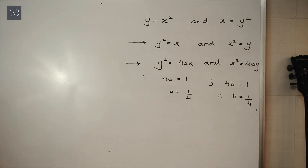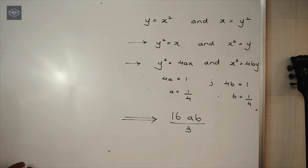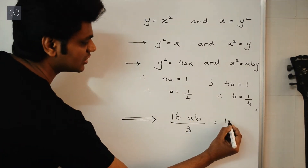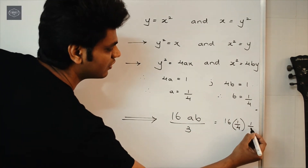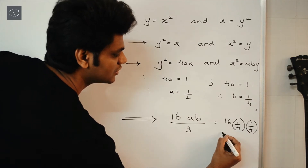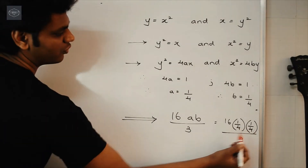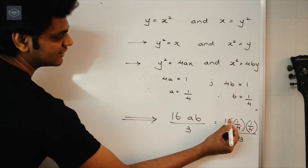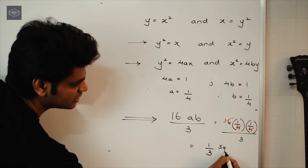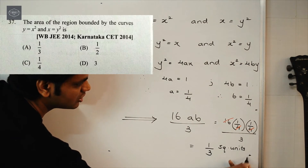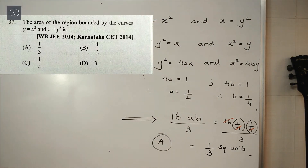The area between two parabolas y² = 4ax and x² = 4by is given by 16ab/3. Putting in the values: 16 × (1/4) × (1/4) / 3. Since 4 × 4 = 16, the 16s cancel, giving us 1/3 square units. So option A is the right answer.